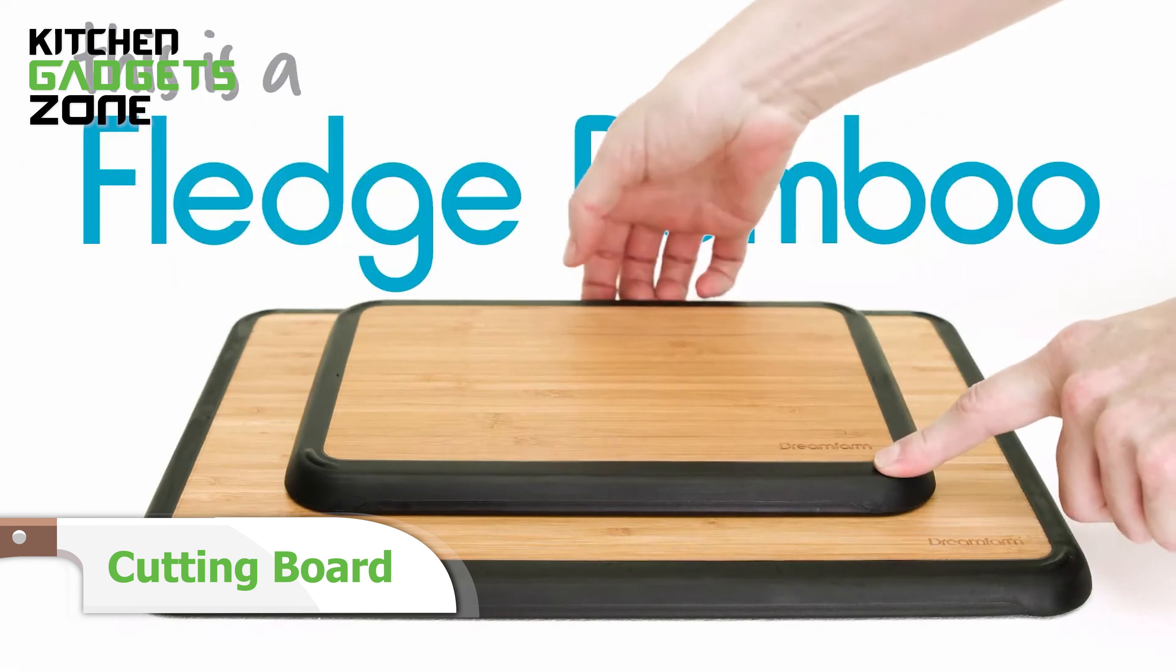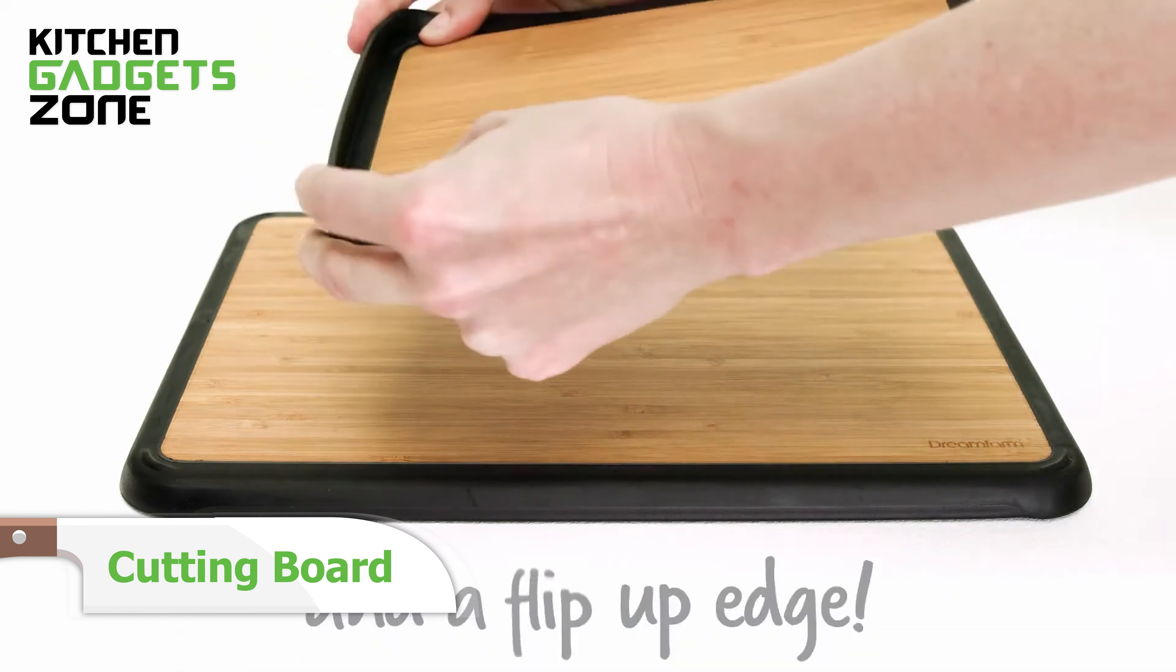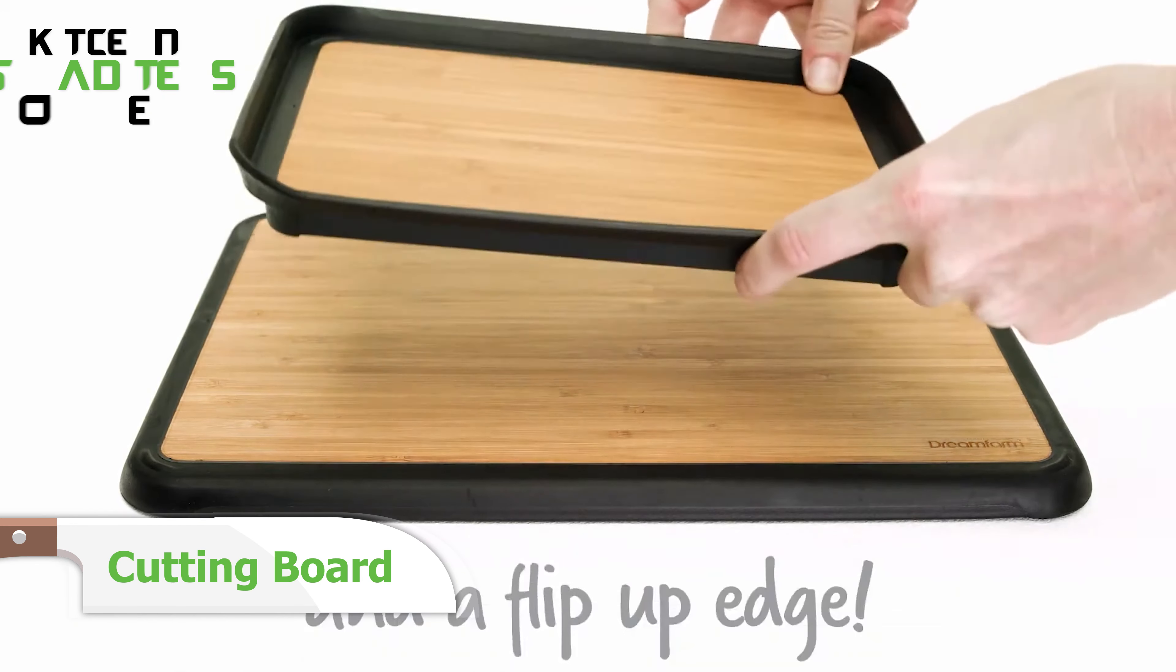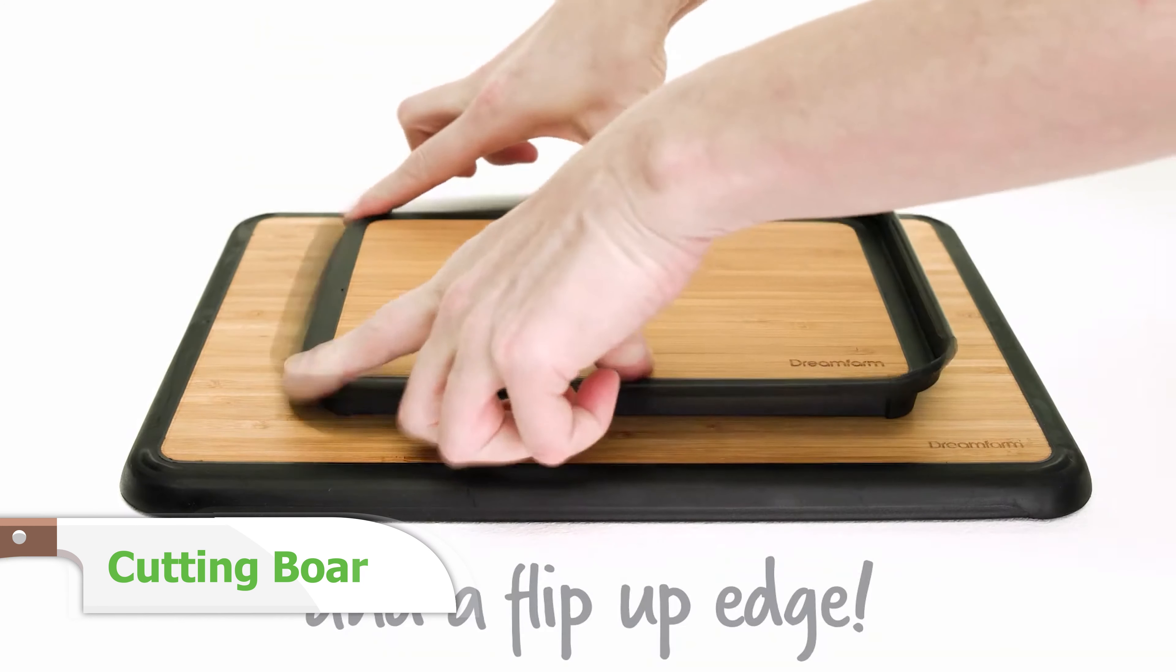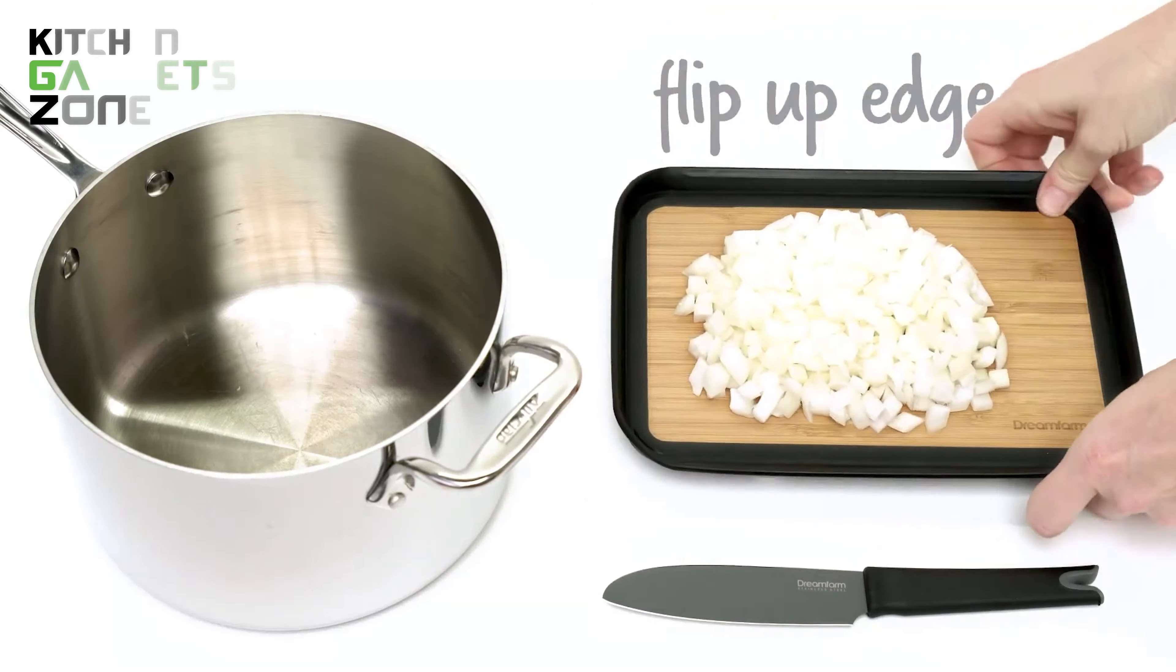Upgrade your kitchen game with the Fledged Bamboo Cutting Board. This double-sided bamboo board is designed with unique flip-up edges that prevent food from falling or rolling off the sides when transported to a pot, bowl, or table for serving.